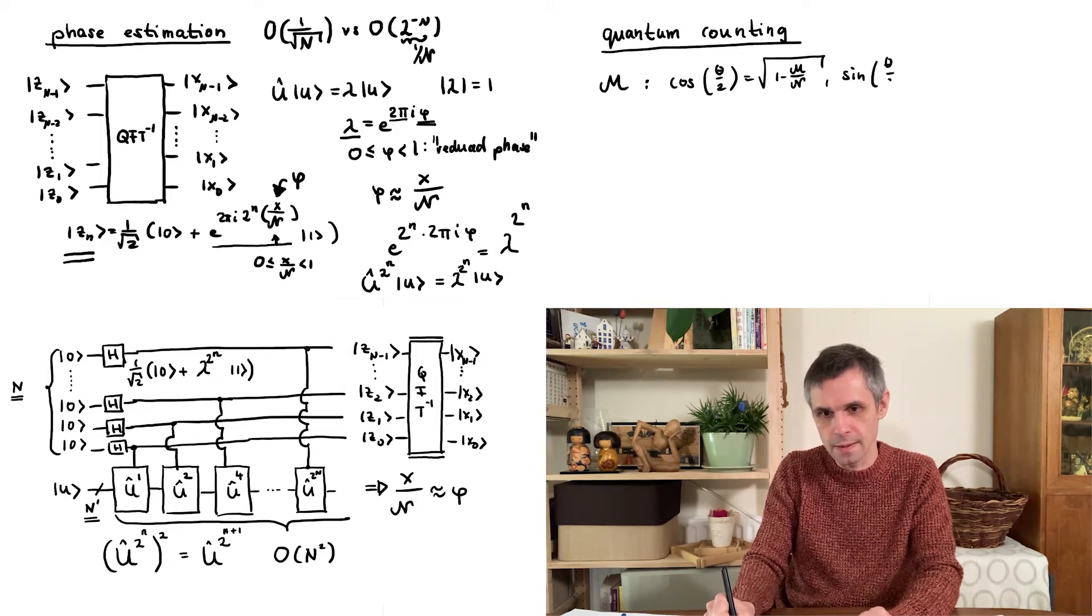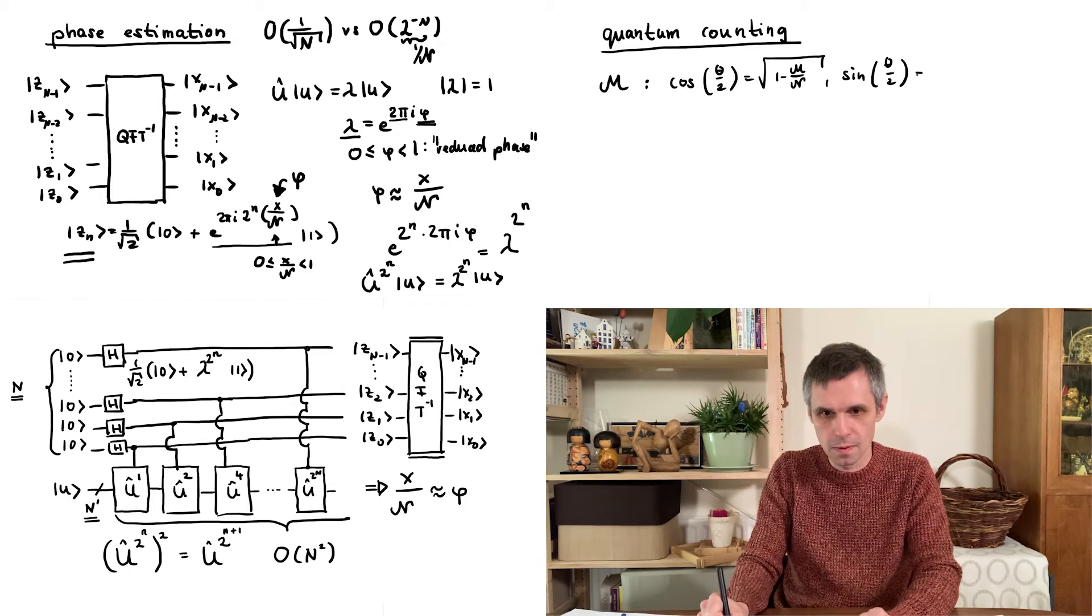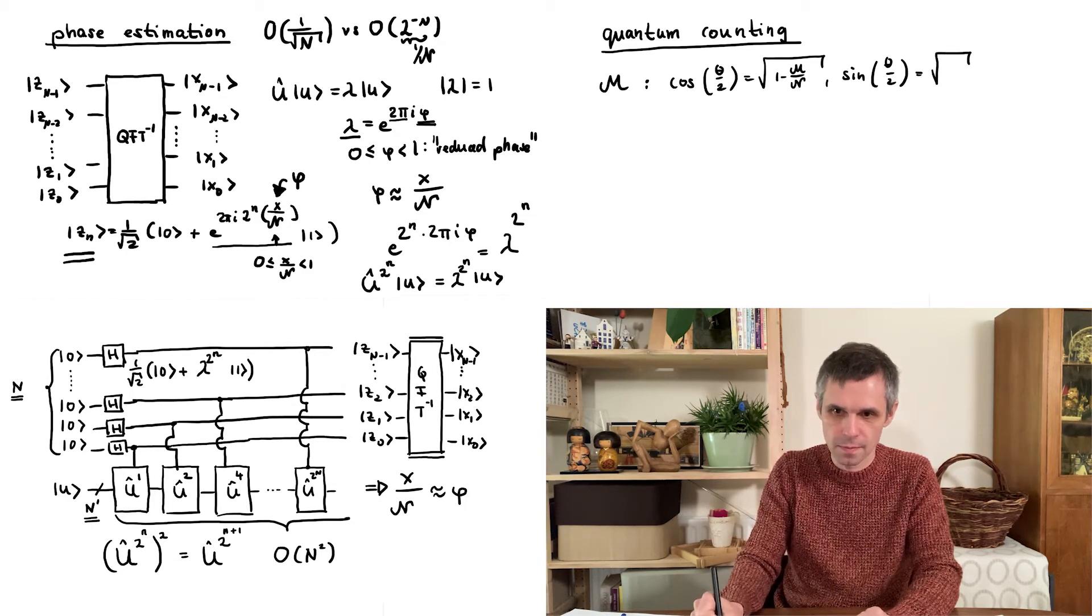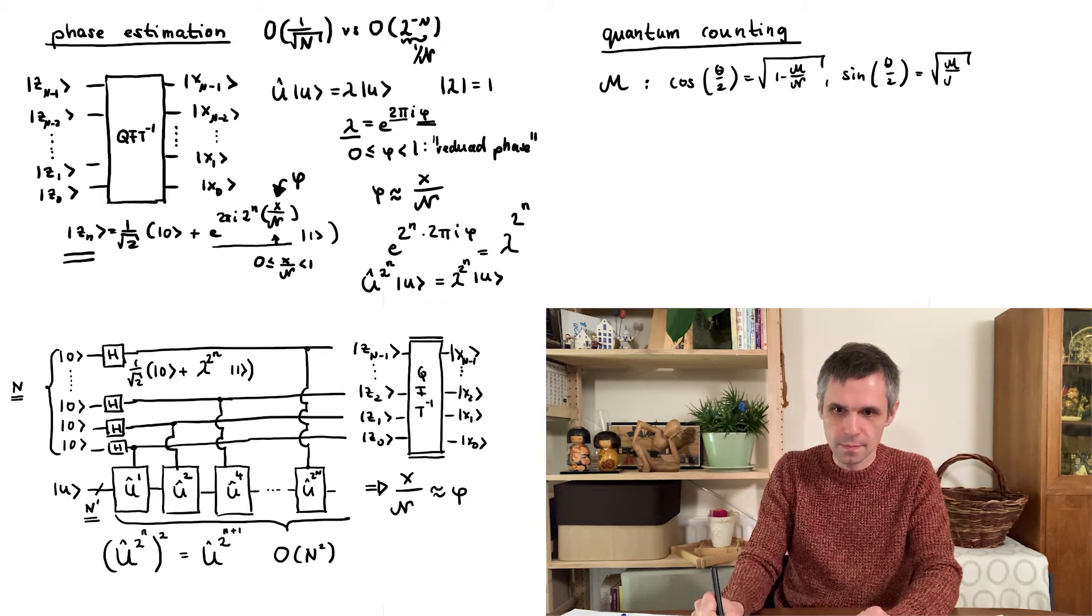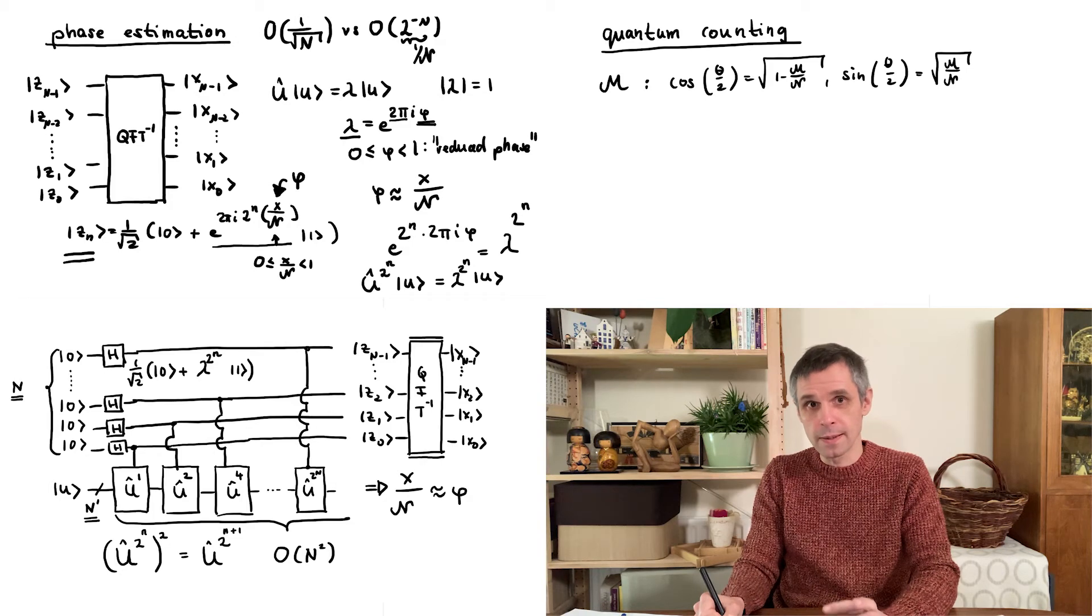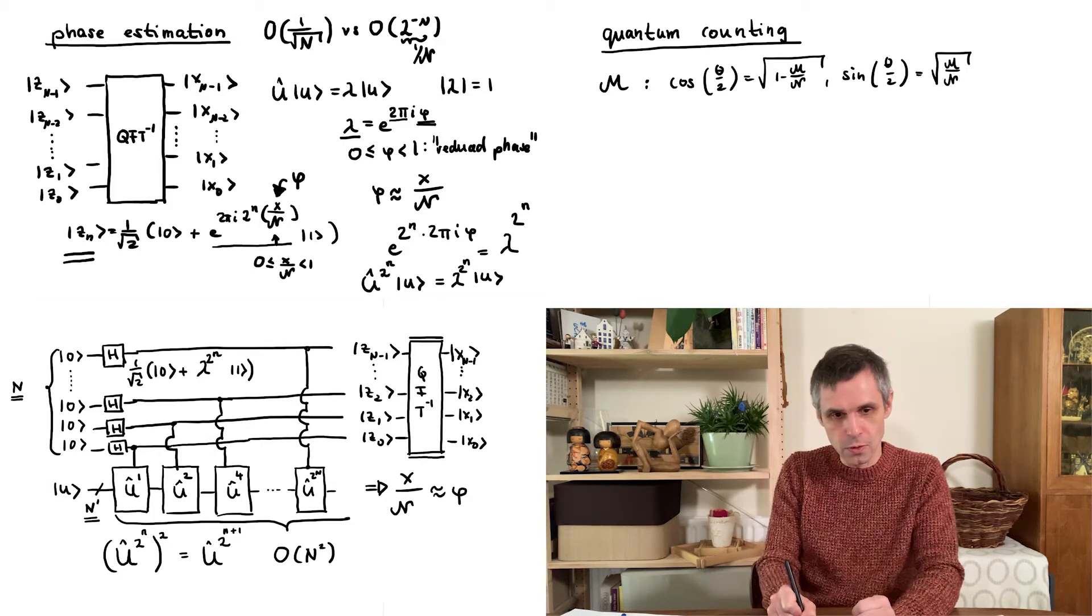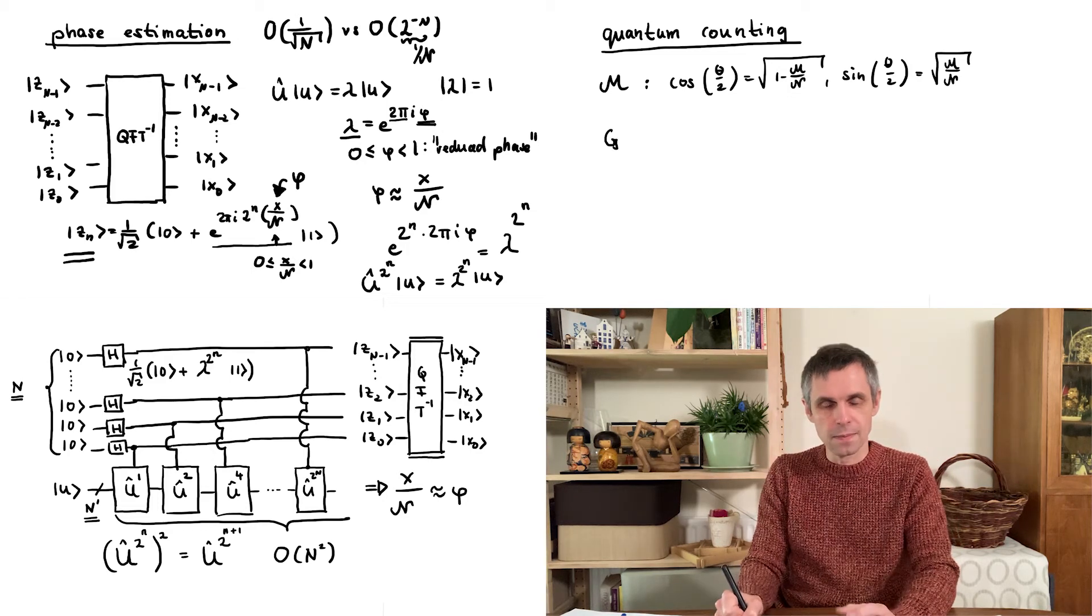Well, this number curly m is encoded in the angle theta because we had this relation here for the cosine of theta over 2 and the sine of theta over 2. And moreover, this angle theta appears in a certain unitary operator, namely the Grover iterate g. On the one hand, this is an operator in the complete Hilbert space of the quantum system.